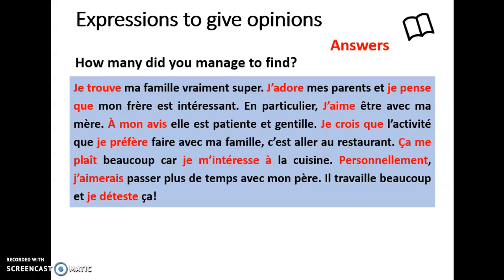Here they all are in red, and most of these appear on your factbook to learn for this week. 'Je trouve ma famille vraiment super' — 'je trouve' means 'I find'. 'J'adore mes parents' — I love my parents. Hopefully that's one you saw right away because we've been using that one since Year 7. 'Et je pense que mon frère est intéressant' — I think that my brother is interesting. 'J'aime être avec ma mère' — I like to be with my mum. 'À mon avis' — it means 'in my opinion'.